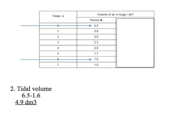Next, we need to work out the tidal volume — the volume exhaled or inhaled per breath. We need the difference between the two: this is the maximum amount of volume in the lungs, this is the minimum. The difference is 6.5 minus 1.6, which gives you 4.9 decimetres cubed.